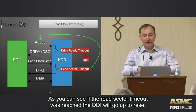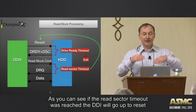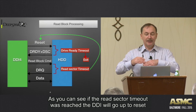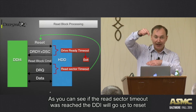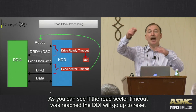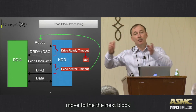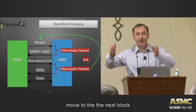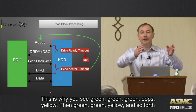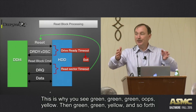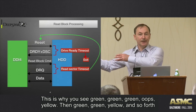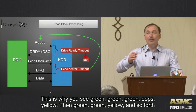As you can see in the diagram, if the read sector timeout is reached, DDI goes back up to reset and moves to the next block. This is why you see green, green, green, then yellow, then green, green, green, yellow — and so forth.